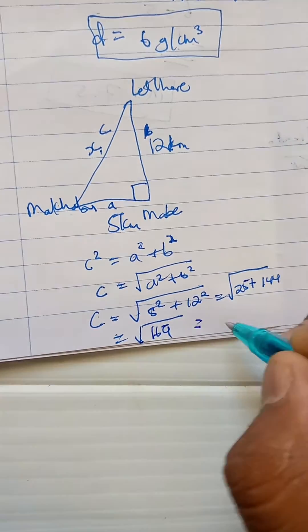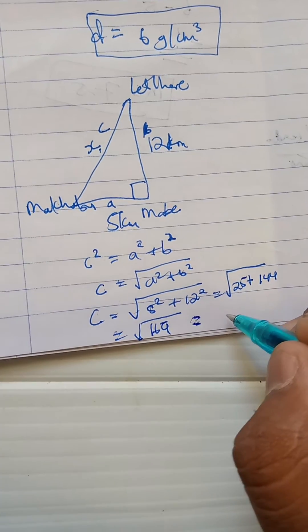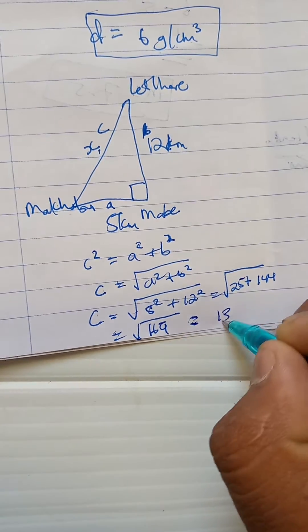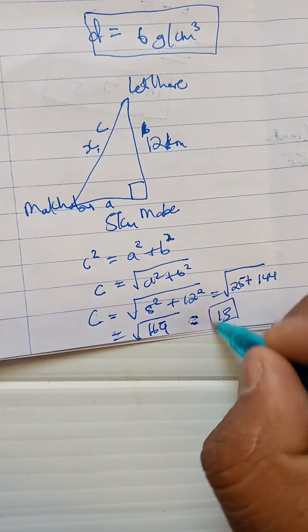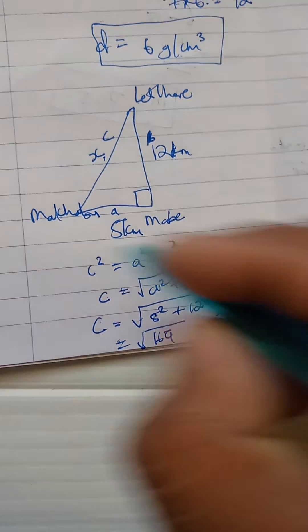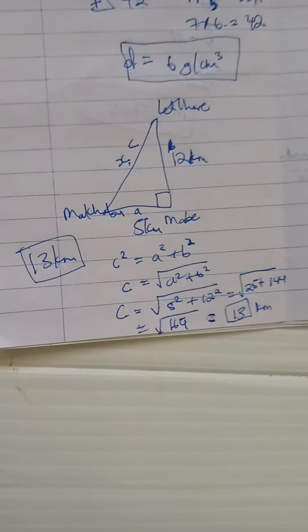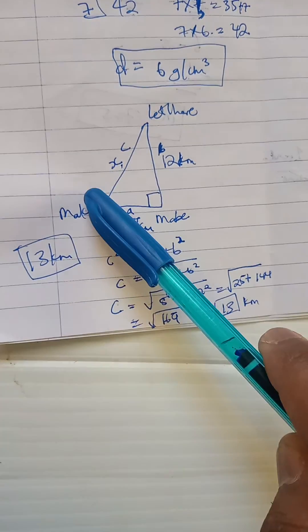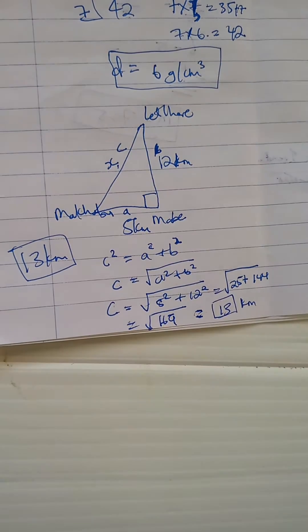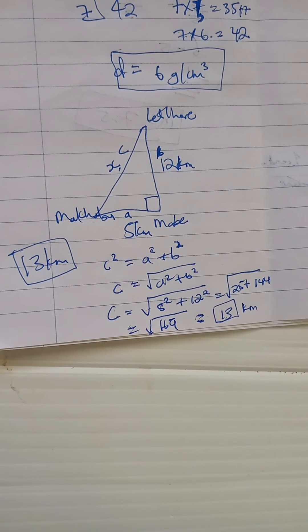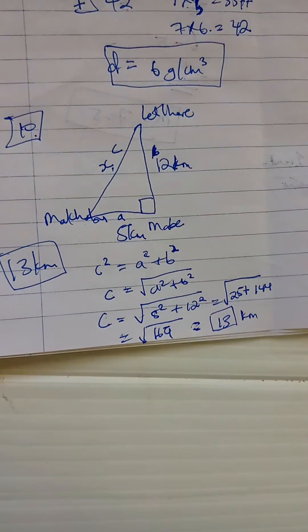You don't have to use a calculator, but we should know that the square root of 169 is 13. So our answer is 13 kilometers. The distance between Makubu and Little Haru is 13 kilometers.